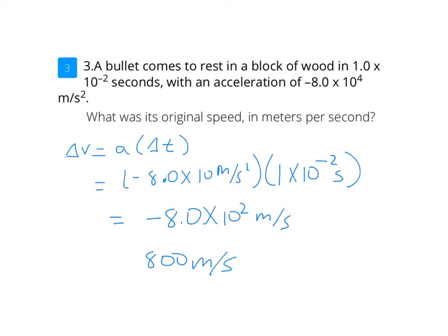Here we have a problem where a bullet comes to rest in a block of wood in 1.0 times 10 to the negative 2 seconds with an acceleration of negative 8.0 times 10 to the 4th meters per second squared. What is the original speed in meters per second? Because we're calculating the change in velocity, we multiply acceleration by time. The bullet lost 800 meters per second of speed, and since it comes to rest at v equals 0, it must have been going 800 meters per second originally.